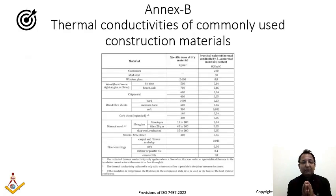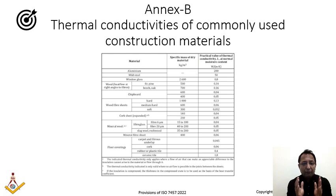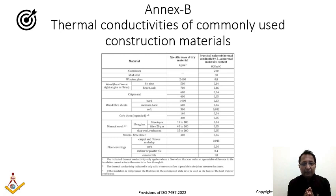Annexure B provides thermal conductivities of commonly used construction materials. Values are clearly tabulated for aluminium, mild steel, window glass, and other materials. These values can be used wherever thermal conductivity of construction materials is needed, for example when calculating the U-value of a composite wall or panel.